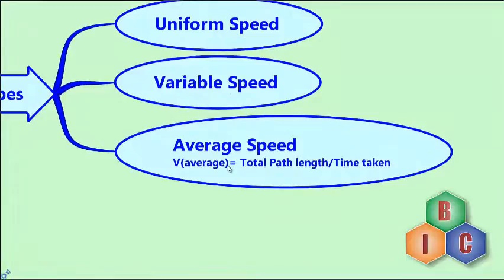Average speed is defined as the ratio of the total path length traveled by the body to the total time taken. So V-average equals total path length divided by total time. The average speed tells us how fast a body is moving, but it does not tell us anything about the speed at a particular instant of time.